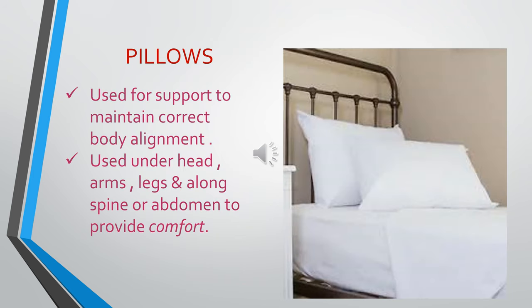First, let us discuss pillows. Pillows are found on every patient's bed and their main purpose is to support proper body alignment. Pillows are mostly used under the head, arms, legs, or along the spine or abdomen to provide comfort. If a patient needs to be in an elevated position, extra pillows are used. If the patient is in a side-lying position, a pillow is used to support the back.